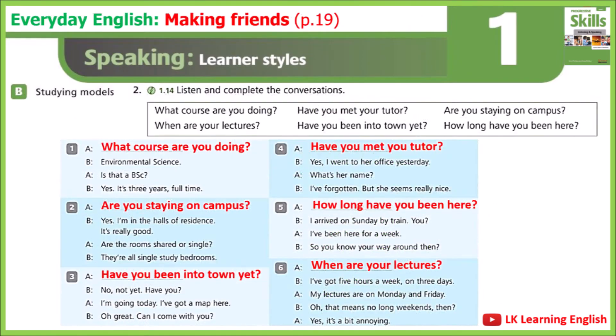Lesson 1.14: Everyday English — making friends. Exercise B2: listen and complete the conversations. One: What course are you doing? Environmental science. Is that a BSc? Yes, it's three years full time. Two: Are you staying on campus? Yes, I'm in the halls of residence. It's really good. Are the rooms shared or single? They're all single study bedrooms.